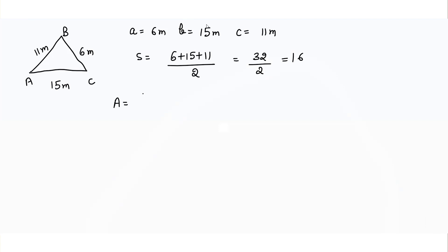Now we find the area using the formula: square root of 16 times 16 minus 6 times 16 minus 15 times 16 minus 11. So square root of 16 times 10 times 1 times 5. 16 can be written as 4 into 4, 10 as 2 into 5, and 1 we leave as is.